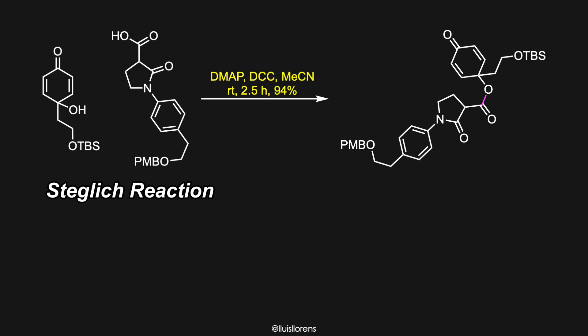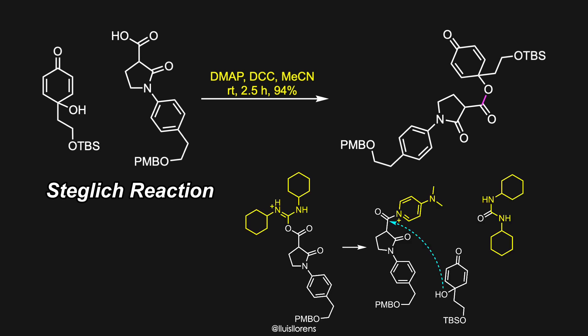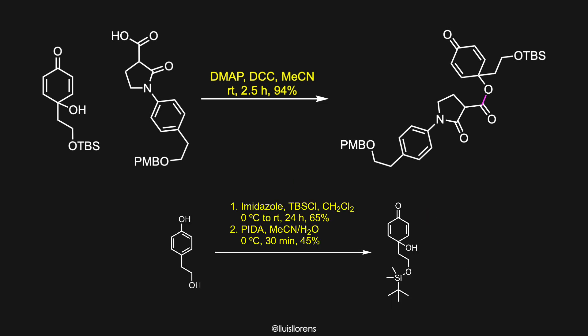The Steglich esterification allows the reaction between alcohols and carboxylic acids with dicyclohexylcarbodiimide as a coupling reagent and dimethylaminopyridine as a catalyst. The alcohol was synthesized in two steps by primary alcohol TBS protection followed by hypervalent iodine oxidation of the resultant phenol.